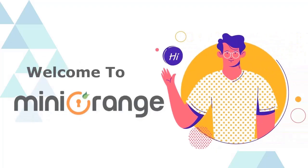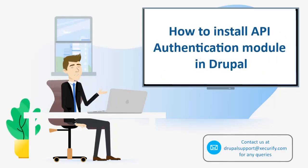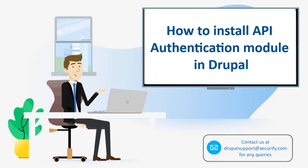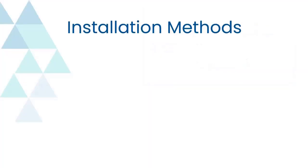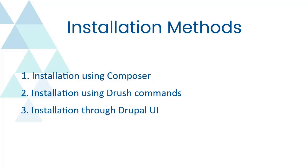Hello and welcome to Mini Orange. In this video, we will demonstrate how you can install the API Authentication Module in Drupal. We can install the module using three methods: Installation using Composer, Installation using Drush Commands, and Installation through Drupal UI.